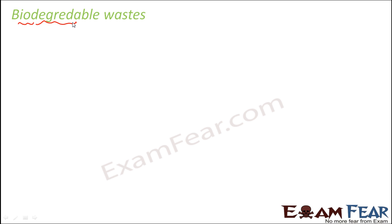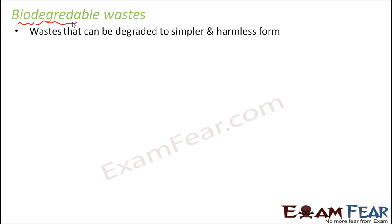Bio means life, and degrade means to break down. So all those waste materials which can be degraded or broken down into simpler harmless forms are called biodegradable wastes. That means in the environment itself, those objects or waste products will be broken down into simpler forms, get mixed with the environment, and used up — so they do not cause any harm to the environment.